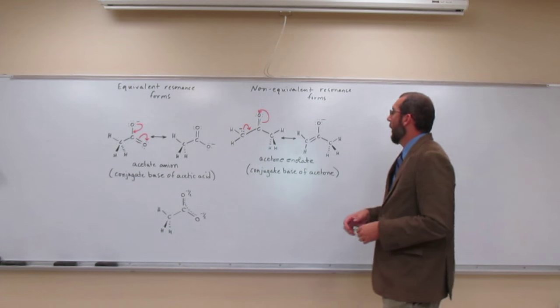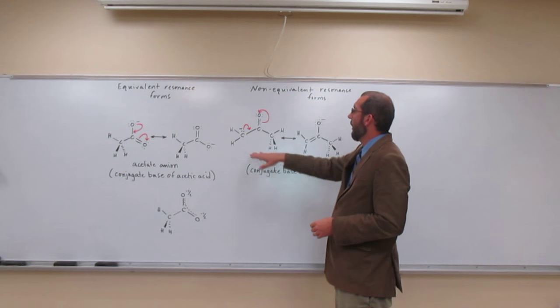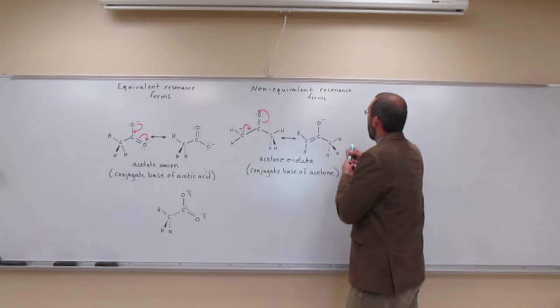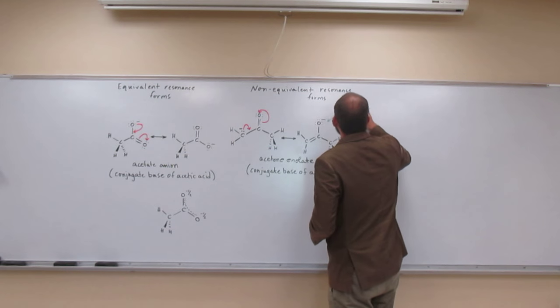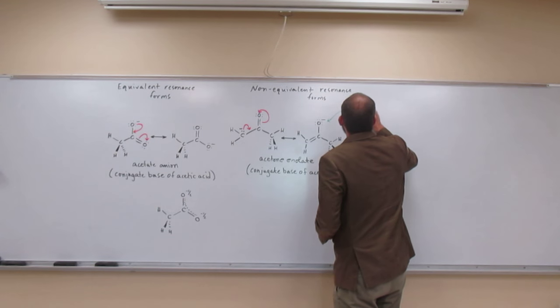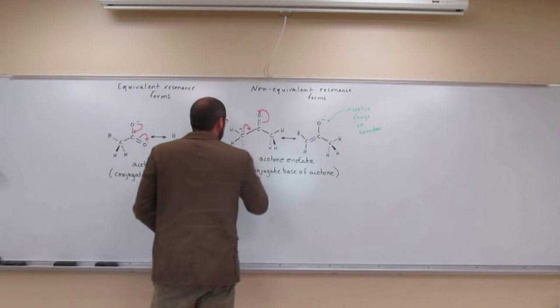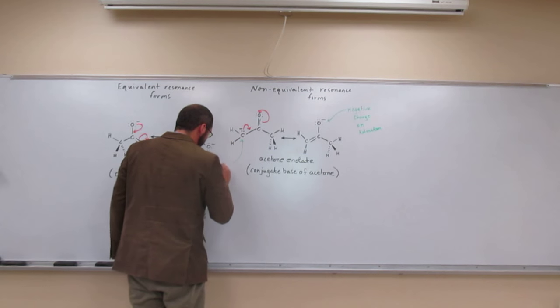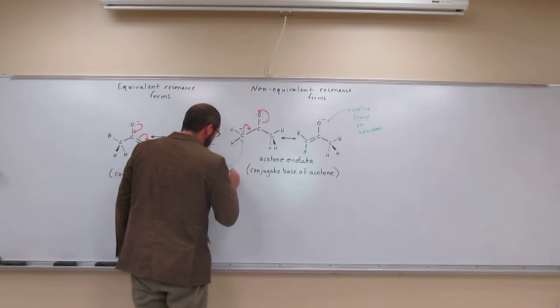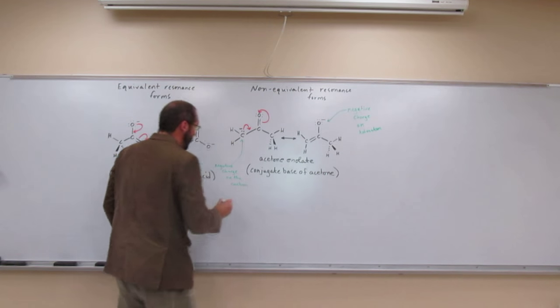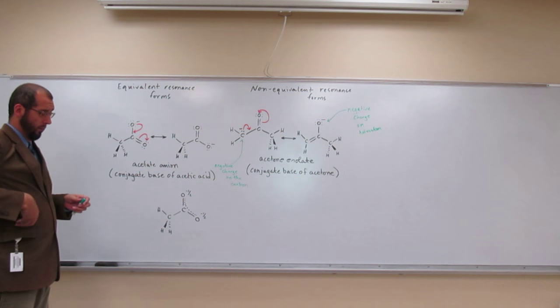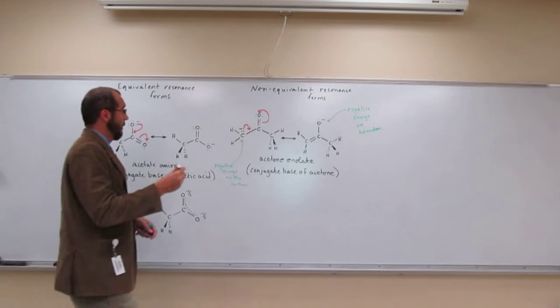So when we look at the two non-equivalent forms here, right, we have one on carbon and one on oxygen. So since we have the negative charge on the heteroatom, and here we have the negative charge on the carbon, we actually don't get an equivalent charge distribution of the resonance hybrid.